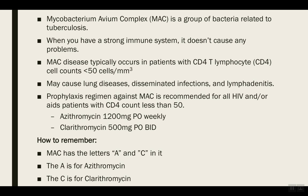Without prophylaxis, MAC can lead to lung disease, disseminated infections in different parts of the body, and lymphadenitis — inflammation of the lymph nodes. Prophylaxis is indicated when the CD4 count is less than 50. The number one recommended regimen is azithromycin, simply because it has fewer drug interactions and is easy to dose — given weekly — compared to clarithromycin, which is an alternative.